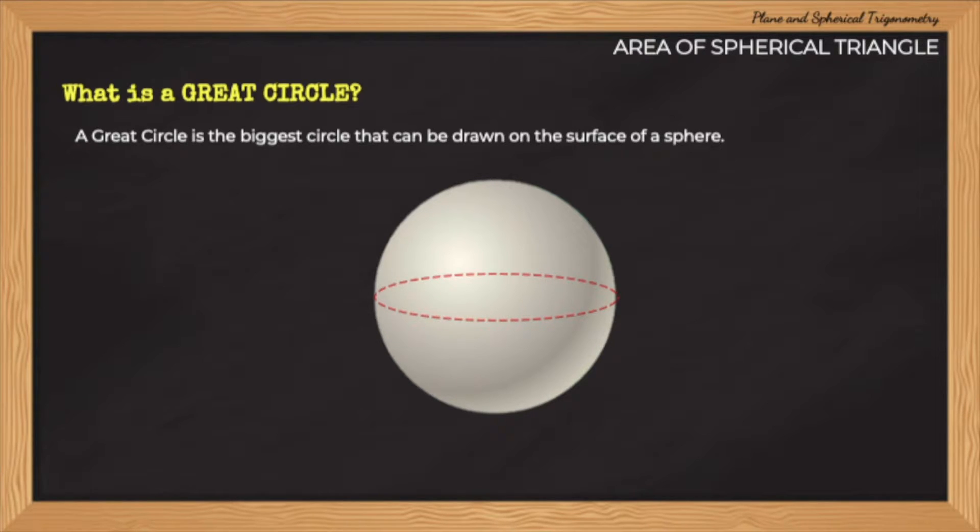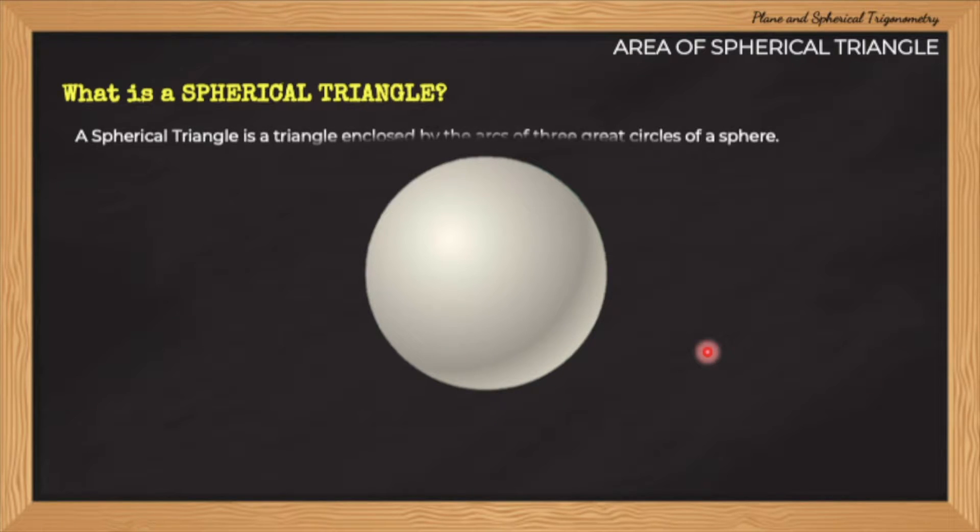What role do great circles play in forming the spherical triangles? A spherical triangle is a triangle that is enclosed by the arcs of three great circles on a sphere's surface. As you can see from the figure here, a small triangle has formed through the intersection of the arcs of the drawn great circles.